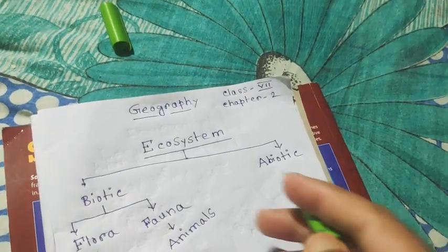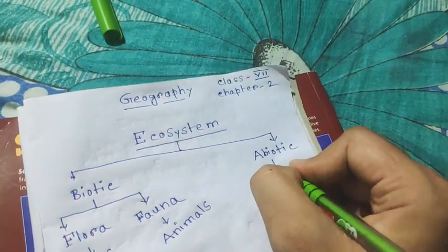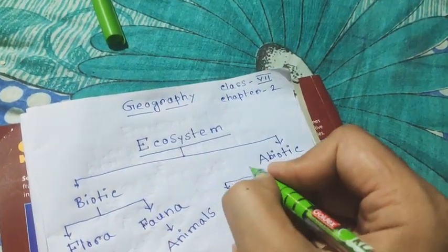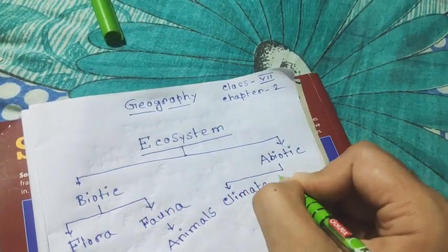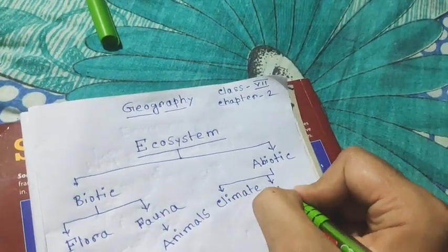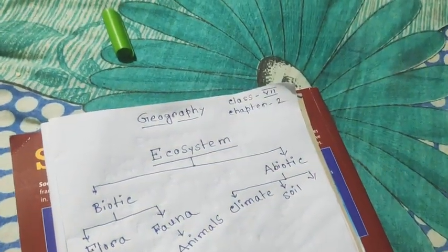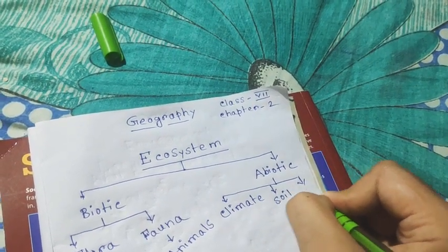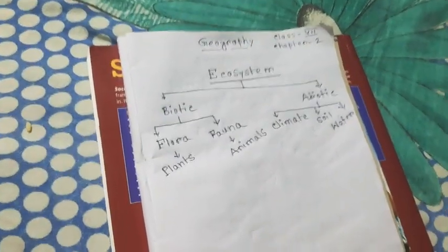An ecosystem is also made up of abiotic elements such as climate, soil, water, minerals, and different types of minerals.